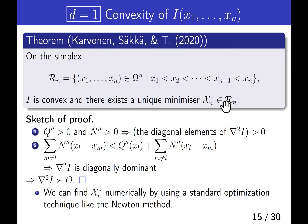Here is a sketch of the proof. Briefly speaking, we can show that the Hessian matrix is diagonally dominant and its diagonal elements are positive, so the Hessian matrix is positive definite. Therefore, we can find the minimizer numerically by using a standard optimization technique like the Newton method.